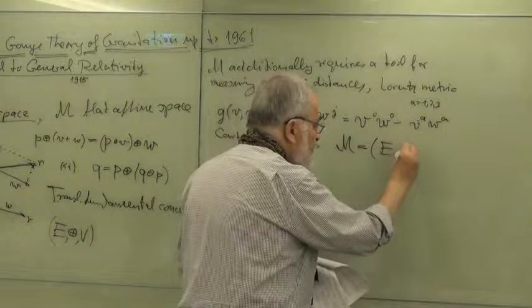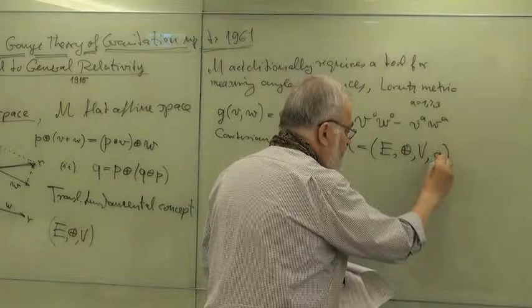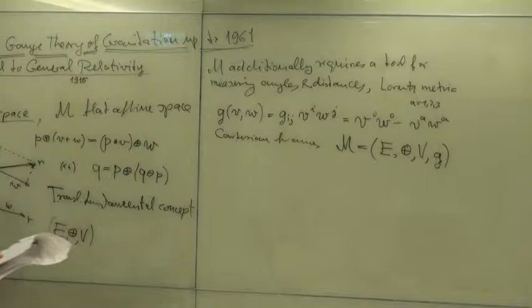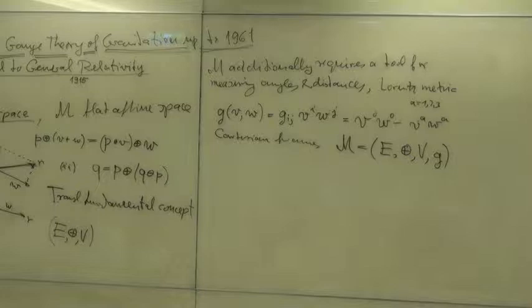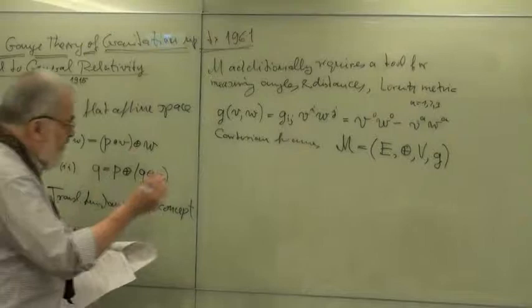By a vector space and by a metric. It's a very affine space, and the metric is given here in Cartesian coordinates. So this is Minkowski space.